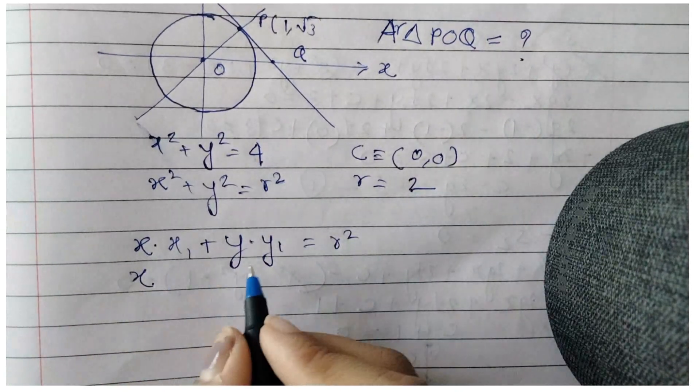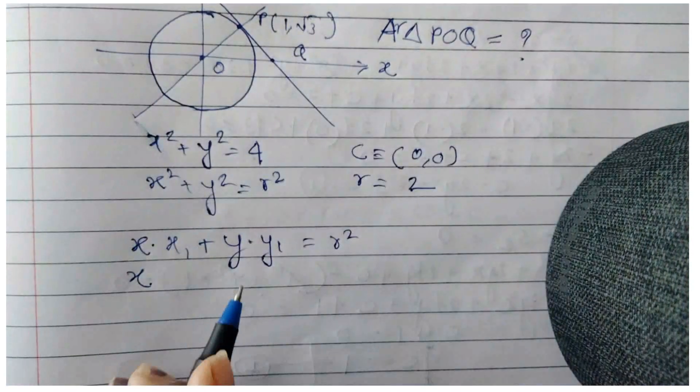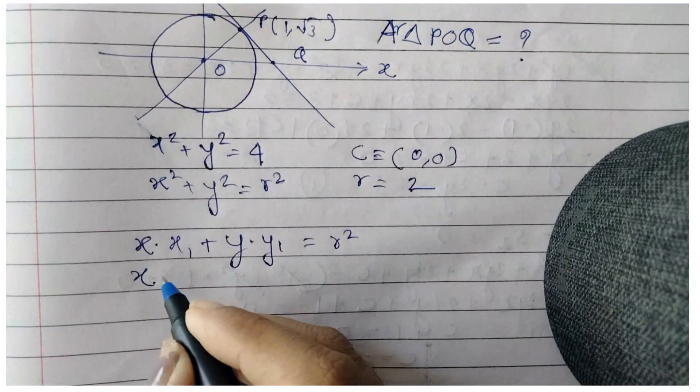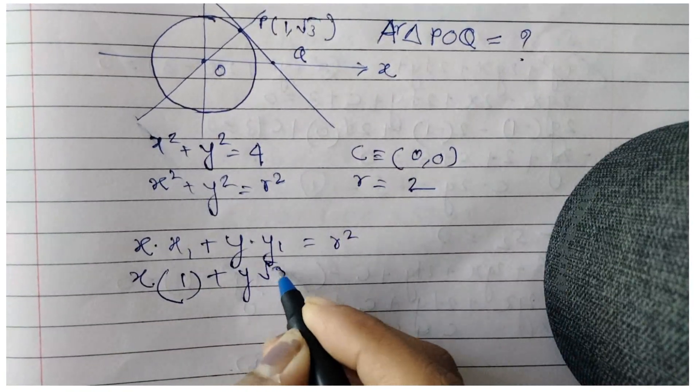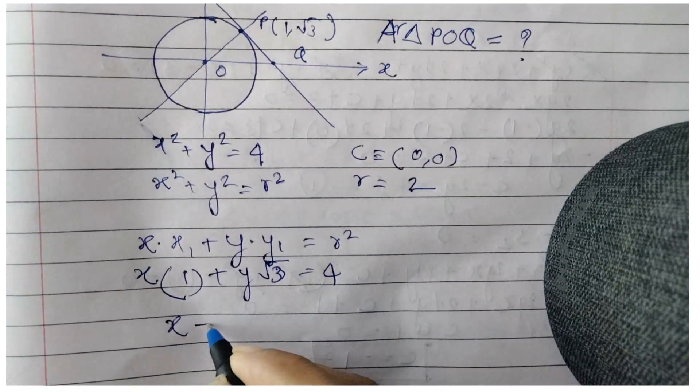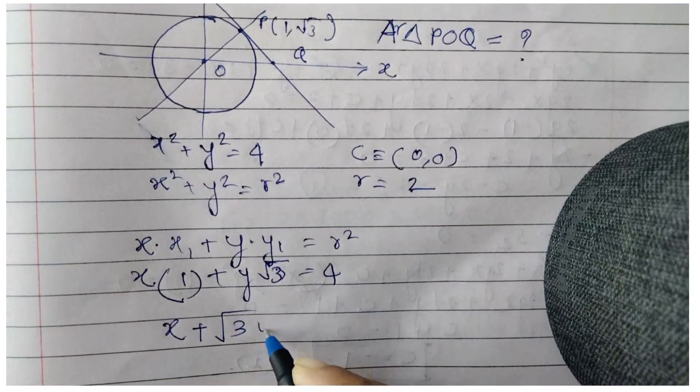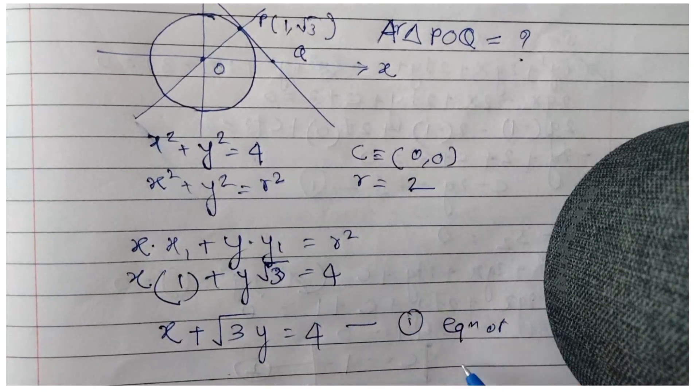Here, (x₁, y₁) is point P since the tangent touches the circle at P. So x(1) + y(√3) = 4, which gives us the equation of the tangent: x + √3y = 4.